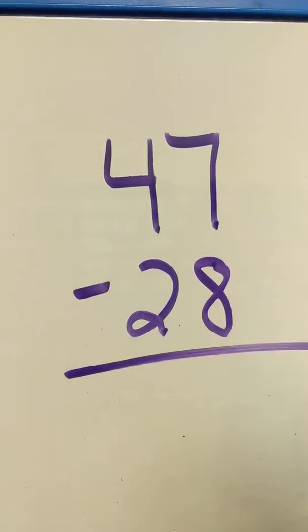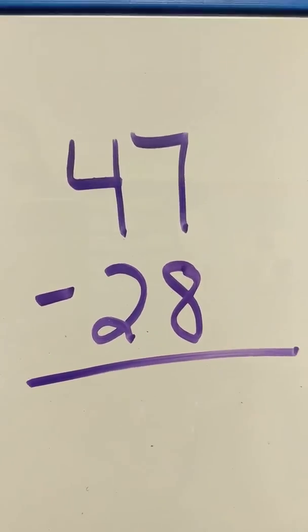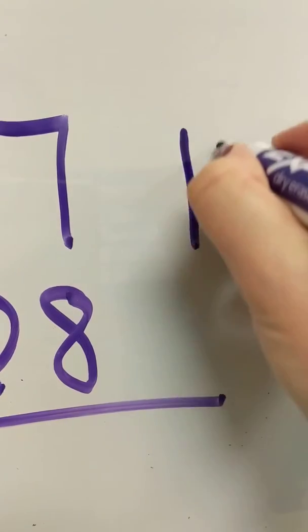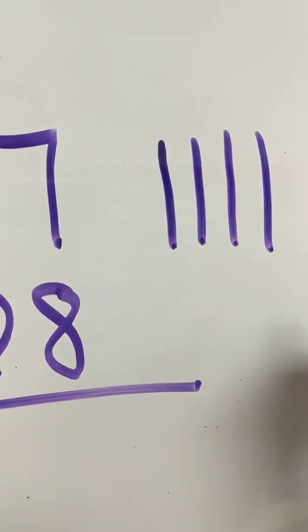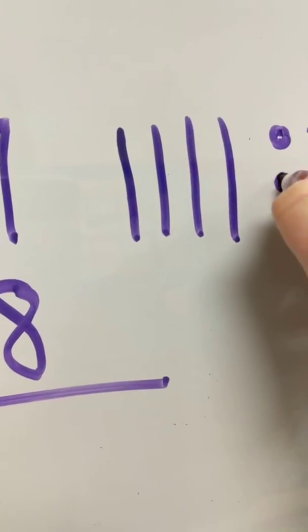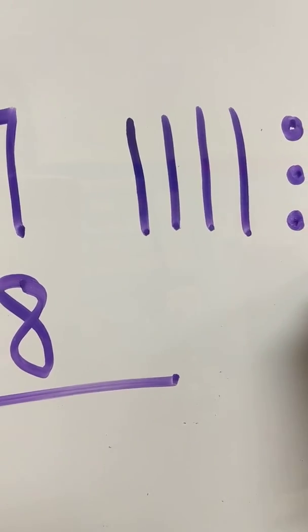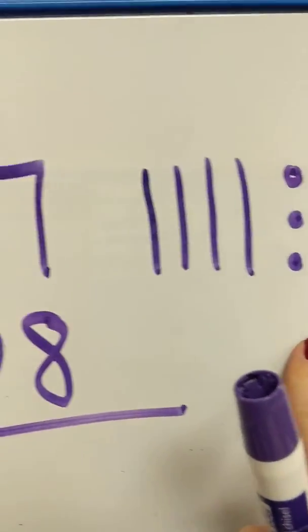So I don't have enough to subtract. So I'm going to have to regroup. So we explain this by making four tens and seven ones. So this represents 40 and seven.